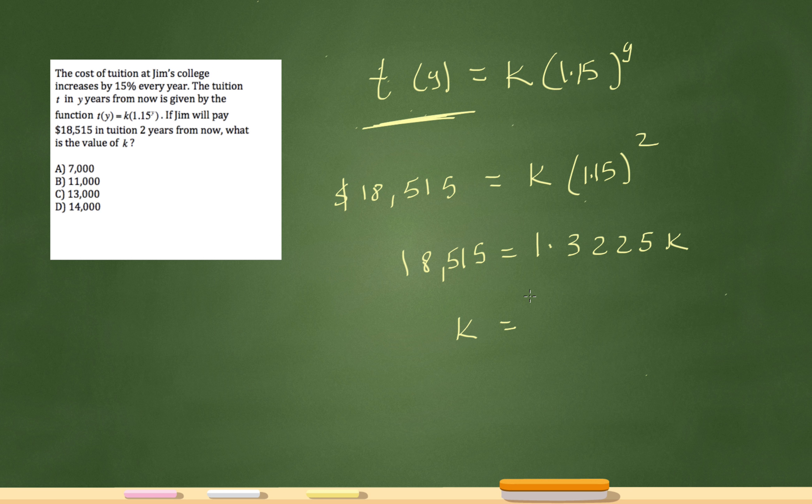So let's check it out, 18,515 divided by 1.3225, and that gives me the right answer, which is 14,000. Or it gives me 13,997, but that will be 14,000. So the value of k is 14,000.